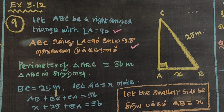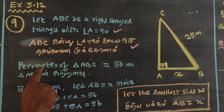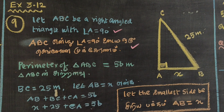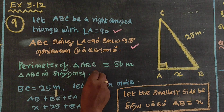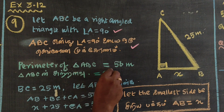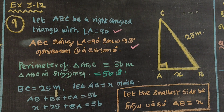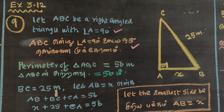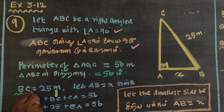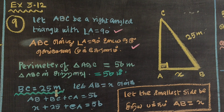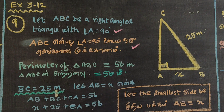The perimeter of the triangle is 56. Let the smallest side AB be x.